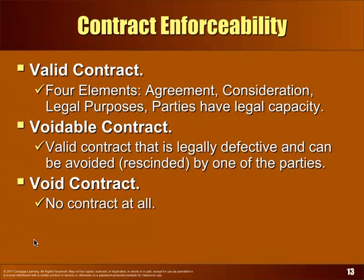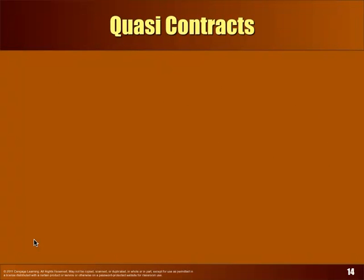An example of a voidable contract: a man lives at home and is suffering from dementia, but his family hasn't interceded. Someone comes to the house and says, 'You need a new roof.' He agrees. Later it turns out that at the time he contracted, he didn't understand what he was doing. That's a voidable contract.